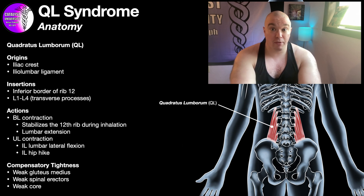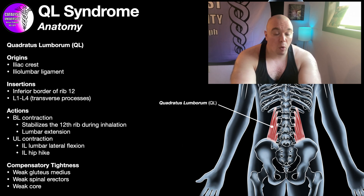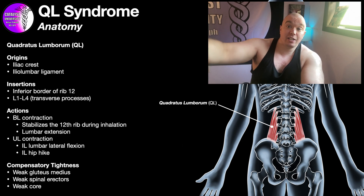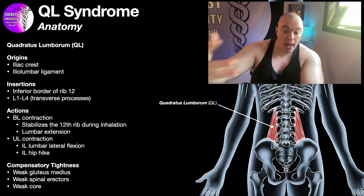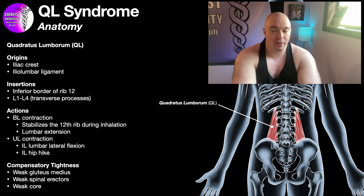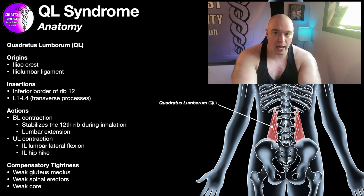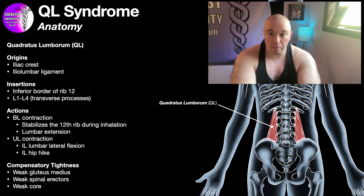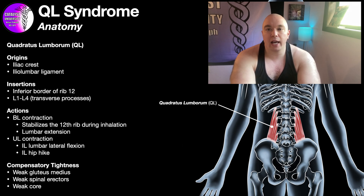When you're hyperventilating during an anxiety attack, panic attack, or during exercise — whether resistance training or aerobic — the higher the intensity, the more inhalation has to be forced and active, and the QLs will be active during that as well. When the QLs contract unilaterally, they facilitate ipsilateral lumbar side bending or lateral flexion, and also ipsilateral hip hike.